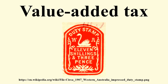In the diagram on the right: deadweight loss is the area of the triangle formed by the tax income box, the original supply curve, and the demand curve. Government's tax income is the gray rectangle labeled 'tax revenue.' Total consumer surplus after the shift is the green area. Total producer surplus after the shift is the yellow area.